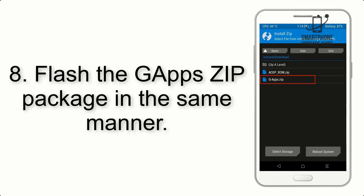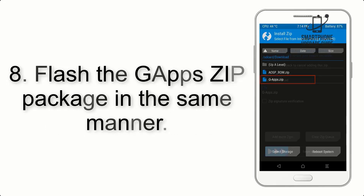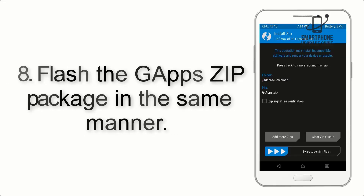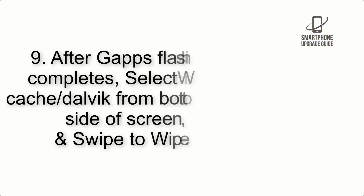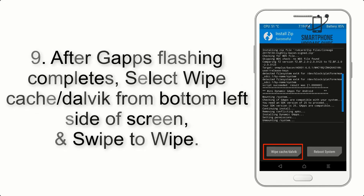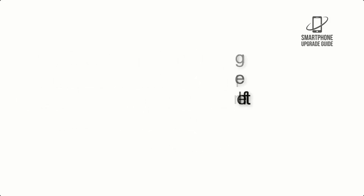Step 8: Flash the GApps ZIP package in the same manner. Step 9: After GApps flashing completes, select Wipe Cache and Dalvik from the bottom left side of the screen, and swipe to wipe.